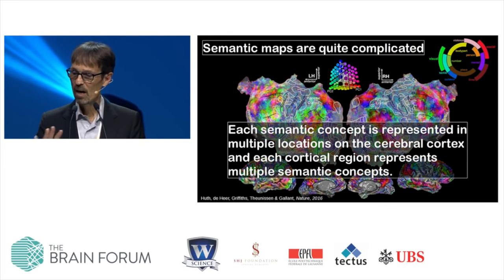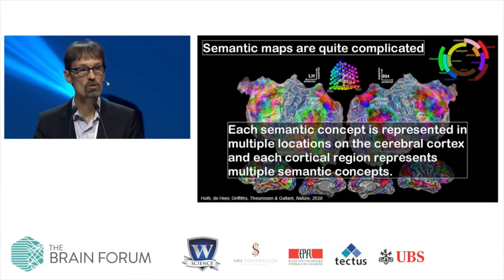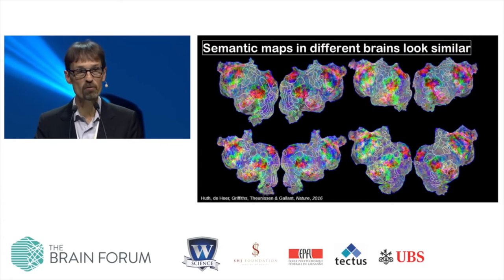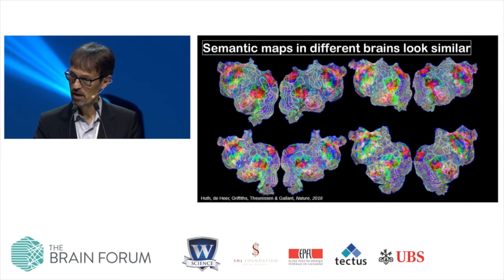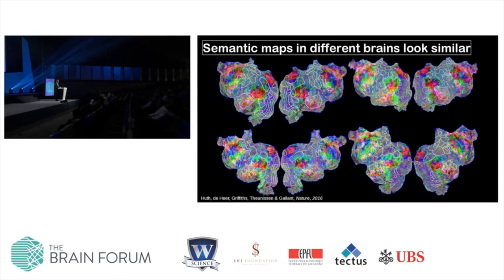Each semantic concept is represented at multiple locations in the cerebral cortex, and each cortical location represents a family of related semantic concepts. This is from only one brain — we can do this in individual subjects. Looking at four brains from the same experiment, the maps are similar despite the anatomy being different between individuals — brains are as different as your ears are between people. But there are rough correspondences between the kinds of semantic information represented in these different brains.